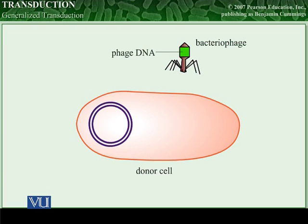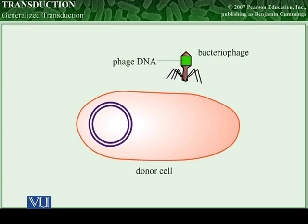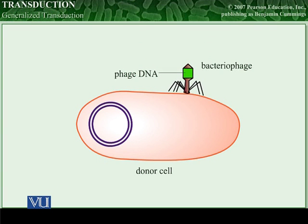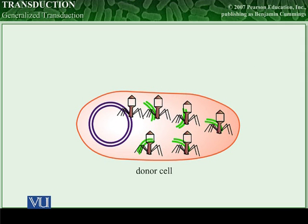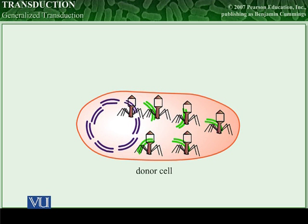At the beginning of generalized transduction in bacteria, a bacteriophage attaches to a bacterial cell wall and inserts its DNA. The phage commandeers the bacterial cellular machinery to synthesize new phage DNA and produce phage proteins. In order to completely convert the bacterium into an efficient virus-producing factory, some of the phage proteins break the bacterial DNA up into small pieces.